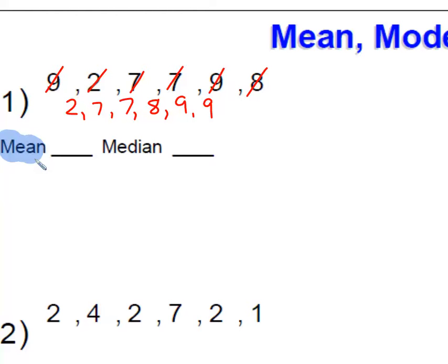Now to find the mean, remember, mean means average. So we're going to go and add those up. 2 plus 7 plus 7 plus 8 plus 9 plus 9. We're going to get that sum. I know that 9 plus 9 is 18.